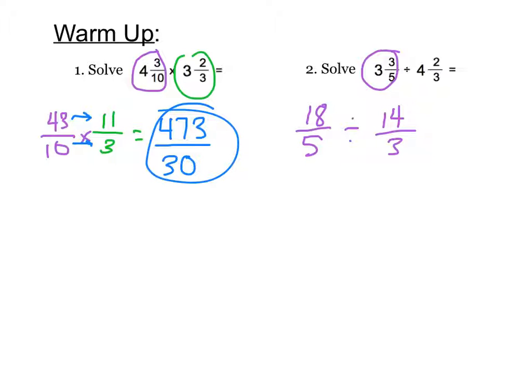And remember to change division into multiplication you keep, change, flip. So we have 18 fifths times 3 fourteenths.